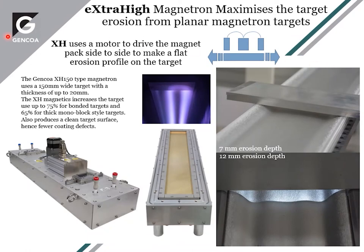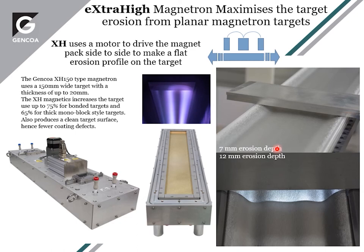Moving on to a dynamic motion source — what we call the Extra High (XH) magnetron. It moves the magnetic array side to side at varying speeds. We have a magnetic trap looping over the target and use a motor to drive it left and right, varying the speed as well as designing the magnetic profile to suit. The essential result is that we can sputter through the middle of the target, creating much flatter erosion — achieving target utilizations of 65% for a monoblock and up to 75% for a bonded target.